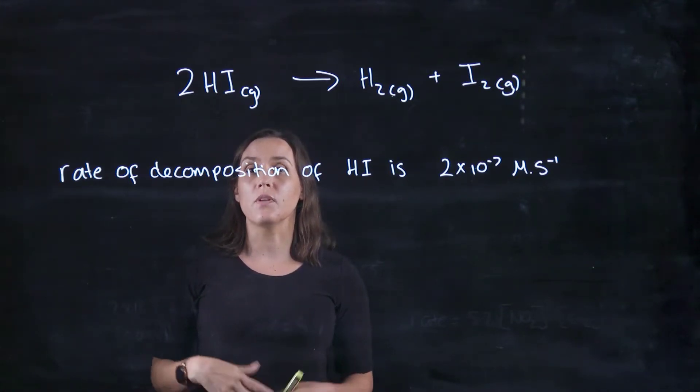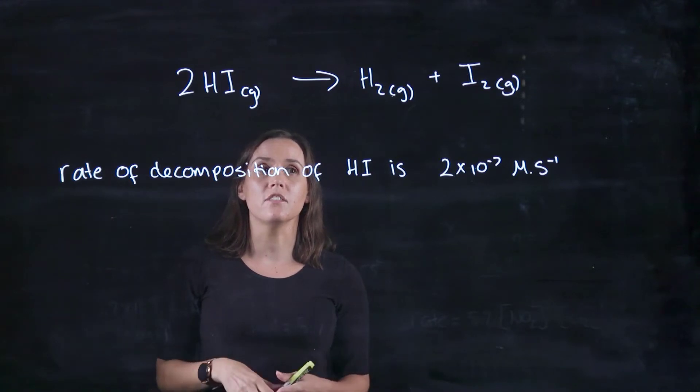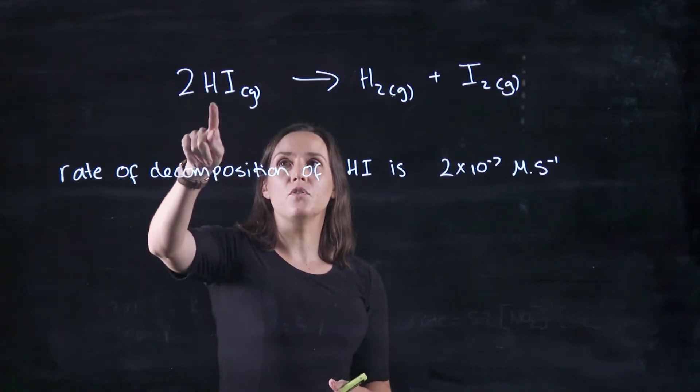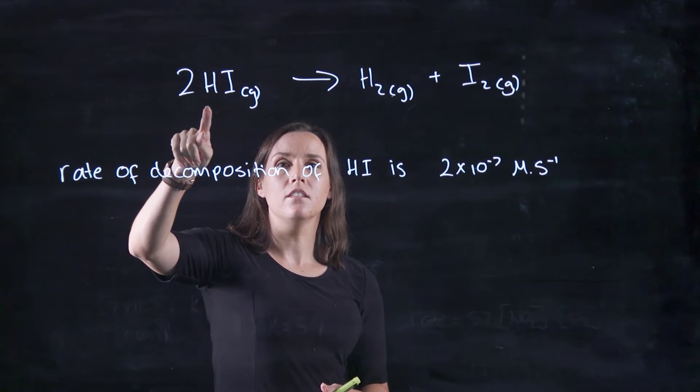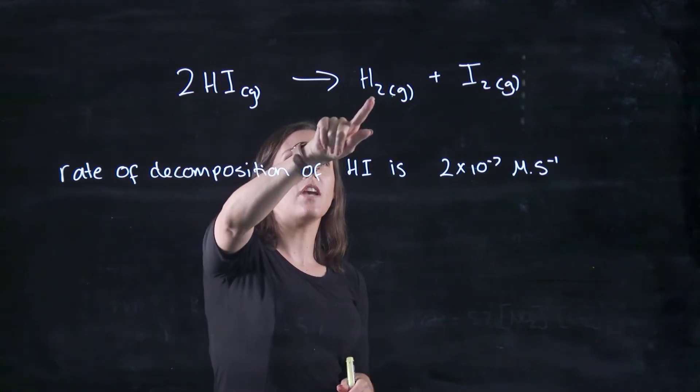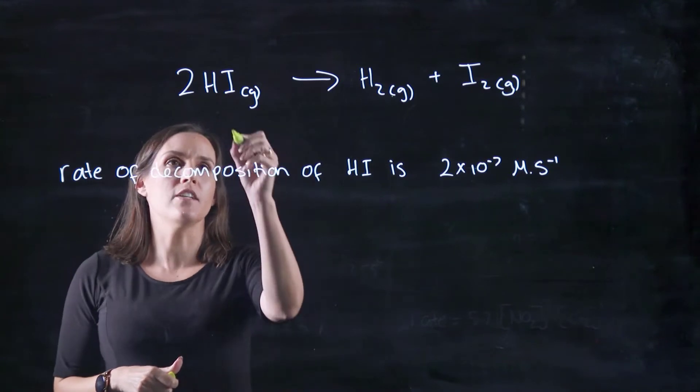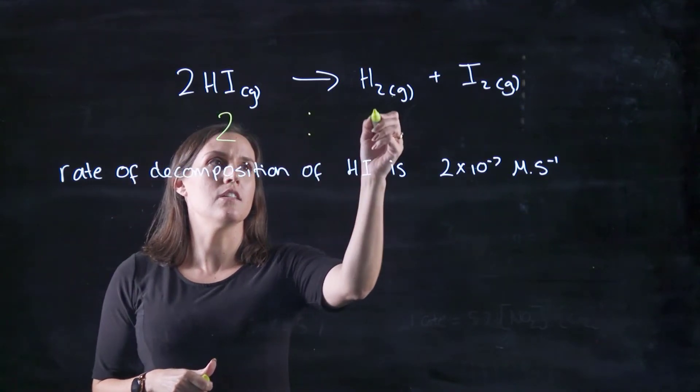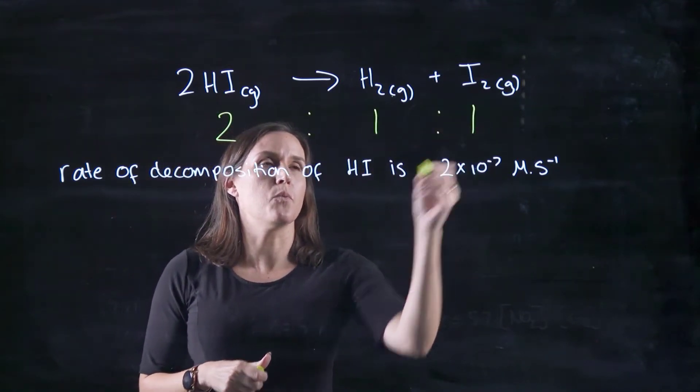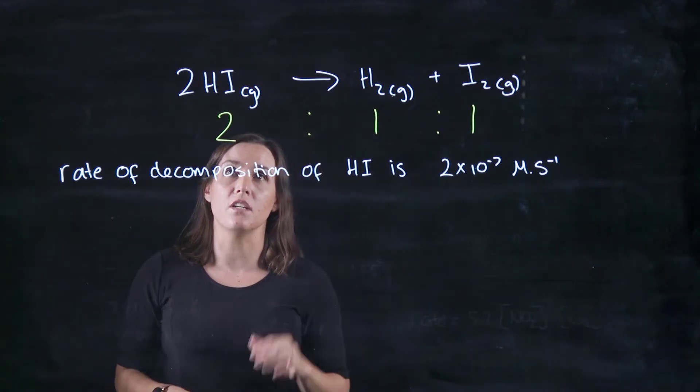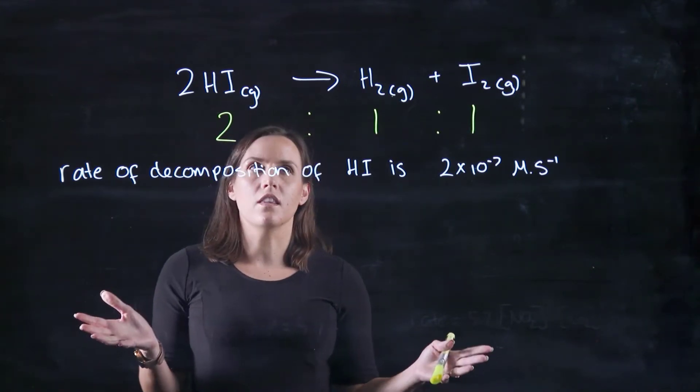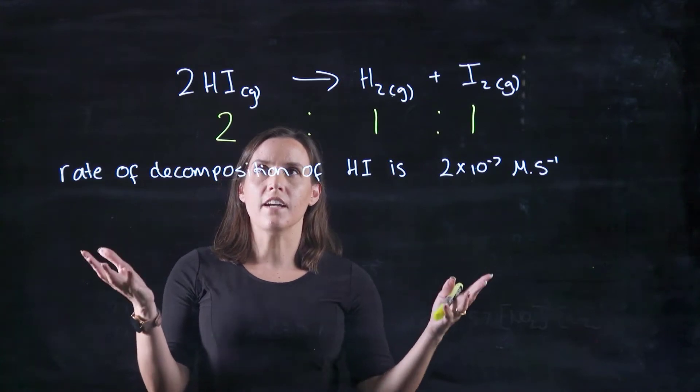So in order to do this we look at the stoichiometry of the reaction. We have 2HI breaking down to give you H2 and I2. So the ratio there is 2 is to 1 is to 1, and that's just looking at the coefficient in front of the particular compound.